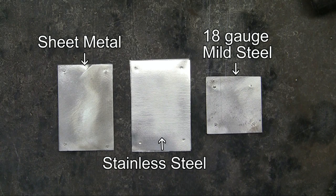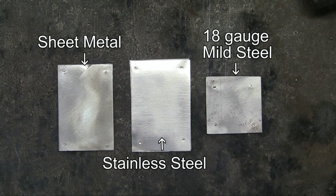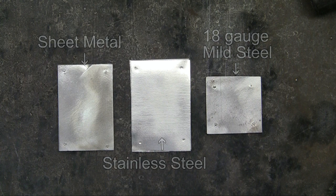I cleaned these pieces up on the wire brush so that you can see the small dimples. Spot welding is an effective way to weld two pieces of thinner material together.